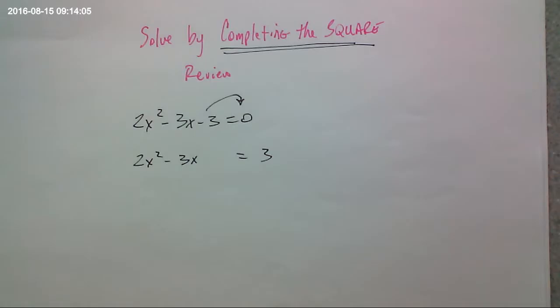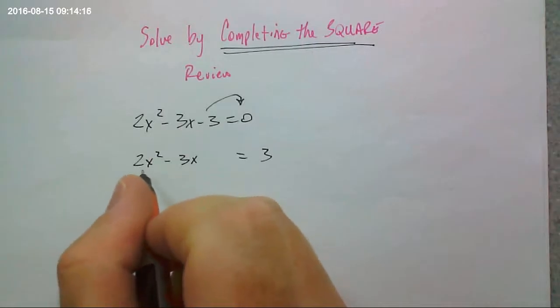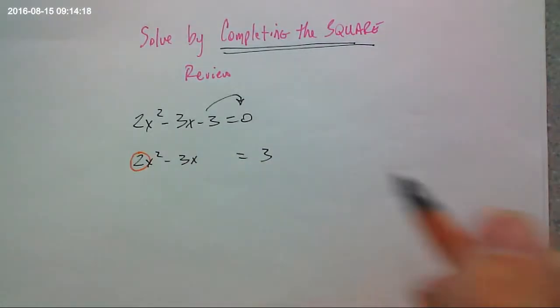First step, you've got to take this number and move it to the other side, right? So, 2x² - 3x = 3. And you leave space, remember? Okay.